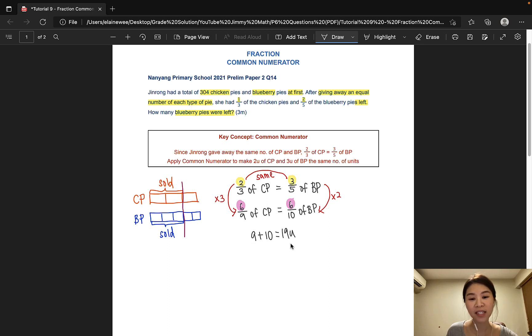And this 19 units is 304, as stated in the very first sentence of the question. And of course, we'll find what one unit is. 304 divided by 19 would give us 16.